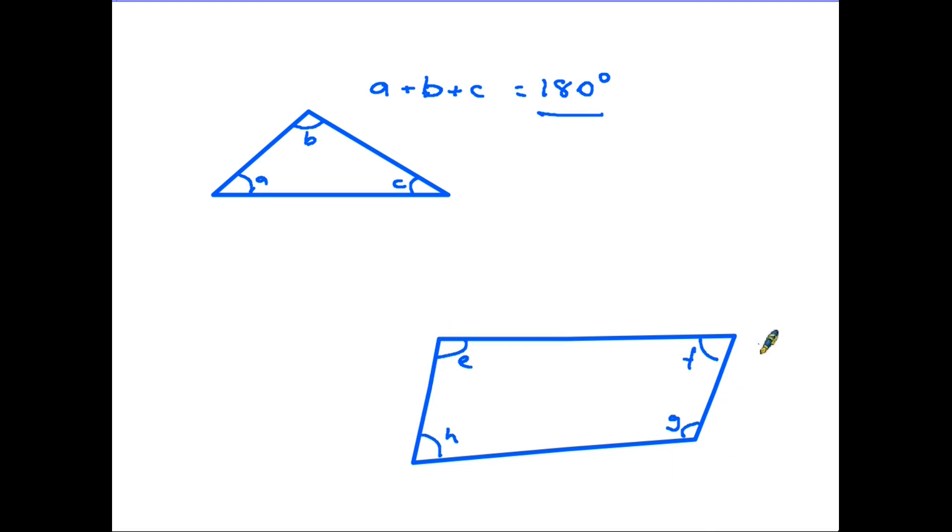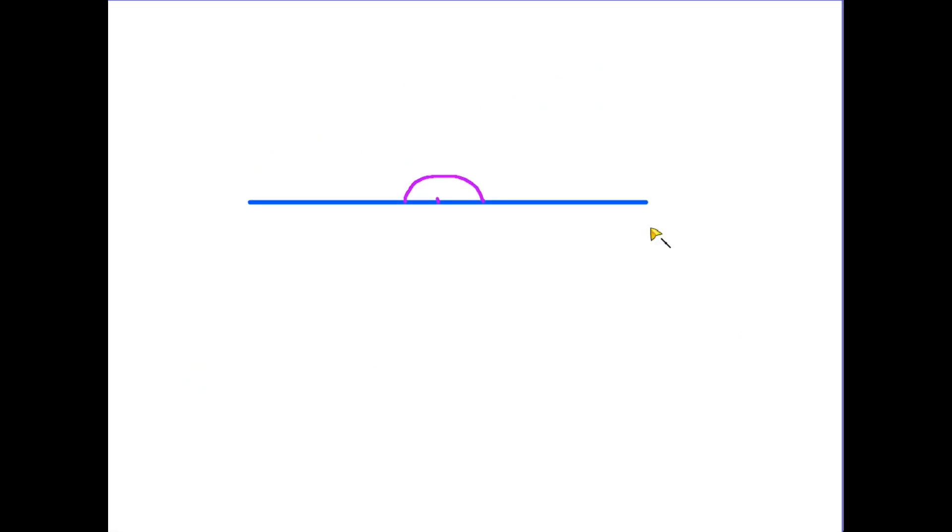Similarly if we have a quadrilateral, that's any four-sided shape so a square, rectangle, parallelogram and so on, we have four angles here and if we add those up, so E plus F plus G plus H, they always add up to 360 degrees.